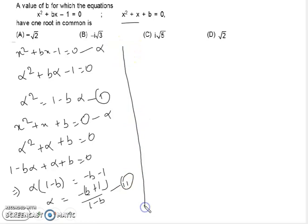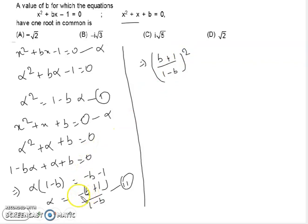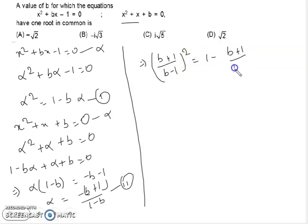Taking minus as a common factor, we can write this as (b + 1)/(b - 1). This is our expression for alpha. Now we put this value of alpha back into the first equation. We can write directly (b + 1)² / (b - 1)² for α², right?